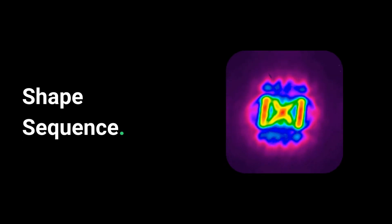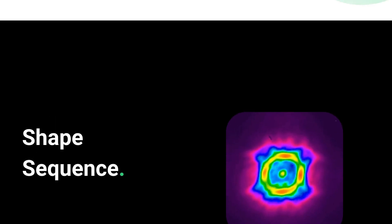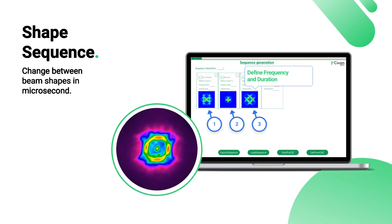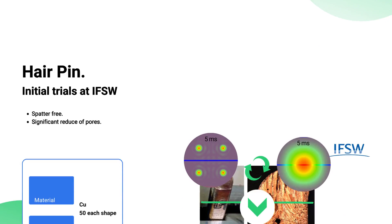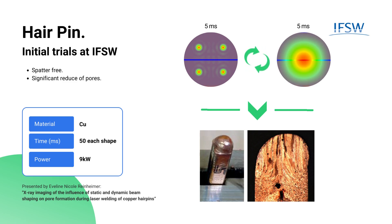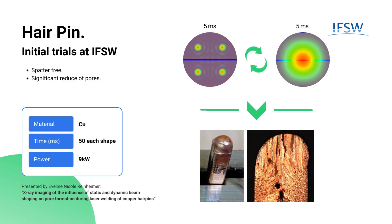Shape sequencing is another powerful capability of Civan's Dynamic Beam Laser, with the ability to change between beam shapes in milliseconds. An example that demonstrates the effectiveness of sequence is the welding of copper hairpins, where by using a sequence, it was possible to avoid crossing the gap, which would lead to spatter and pause.